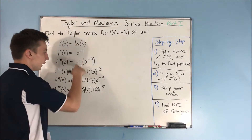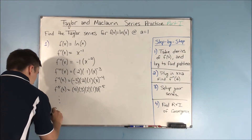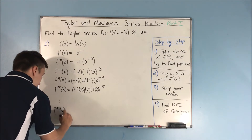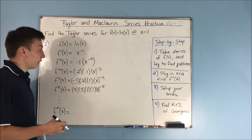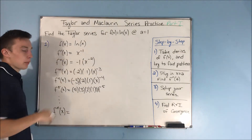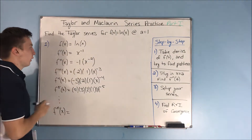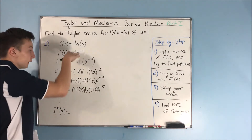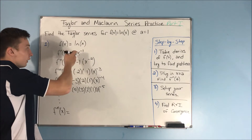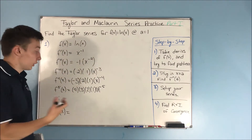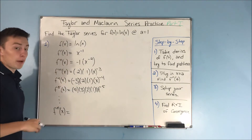You can start to see a pattern here. Now, one thing to note before we write our nth derivative is that our pattern doesn't start until f prime of x. Natural log of x doesn't fit — there's no alternating negative between f of x and f prime of x, and there's no factorial either. So it's not going to be part of our pattern; we're going to start from f prime of x.